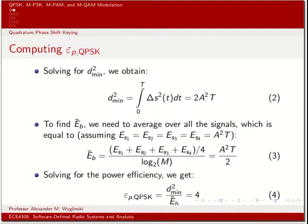Now let's calculate the power efficiency of QPSK. As in the last class, we need to compute the minimum Euclidean distance and the average bit energy. One important distinction here is that because we have more than one bit per symbol — a pair of bits — we need to understand how to get average bit energy from average symbol energy, unlike BPSK's one-to-one mapping.